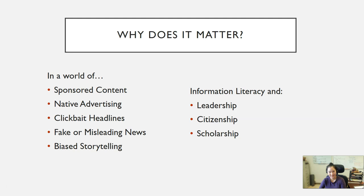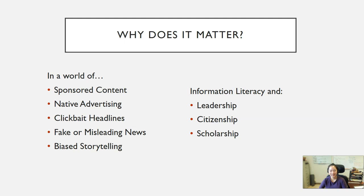In terms of leadership, a good leader has to be able to separate out their own biases toward or against certain people. A good, fair leader doesn't play favorites. They'll listen to two different stories and be able to separate out who is telling the truth and who is inflating a story to make themselves seem like the victim. To be a good citizen, you have to do the research on news articles that you may instinctively agree or disagree with based on who wrote them. If you know that your biases are towards a person, you can control your reaction that much better.